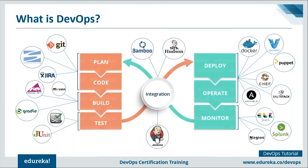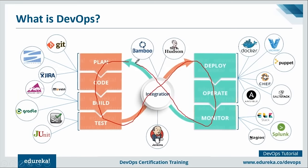DevOps is characterized by operations staff making use of many of the same techniques as developers for their system work - which becomes clear when we discuss infrastructure as code. DevOps bridges the gap between dev and ops to deliver good quality software on time. This is shown as an infinite loop because everything - coding, testing, deployment, monitoring - happens continuously in DevOps.